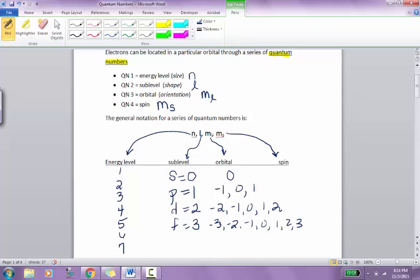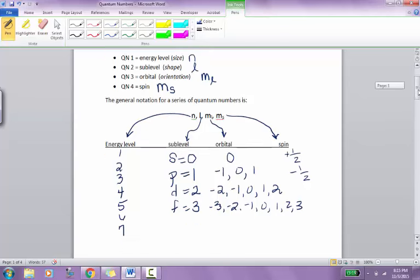Now spin refers to that opposite quality that two electrons must have in order to occupy the same sublevel. So we can have positive 1 half, or we can have negative 1 half for spin. We're not going to give it just a plus or a minus, because electrons, of course, have a negative charge to them. So we don't want to just do positive or negative, because that would be confusing. Because this, of course, is not confusing, right? So we're going to give it plus and minus 1 half for the spin.